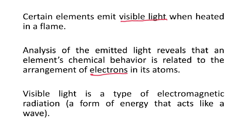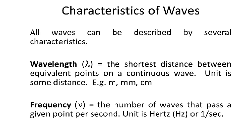Visible light is a type of electromagnetic radiation. If you took ICP, we did stuff with the electromagnetic spectrum, so this part should not be totally new to you. Electromagnetic radiation is a form of energy that acts like a wave. So let's talk about the characteristics of waves — we did a whole unit on waves in ICP.